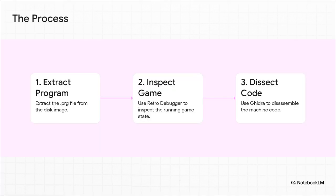So what's in the Digital Archaeologist Toolkit? Well, first, you get the program file — that's our artifact. Then you use a special debugger that basically puts the game under a microscope while it's running. It lets you freeze time and poke around its insides. And finally, you bring in the heavy machinery: a disassembler that acts like a Rosetta Stone, translating the computer's native language into something a human can actually understand.